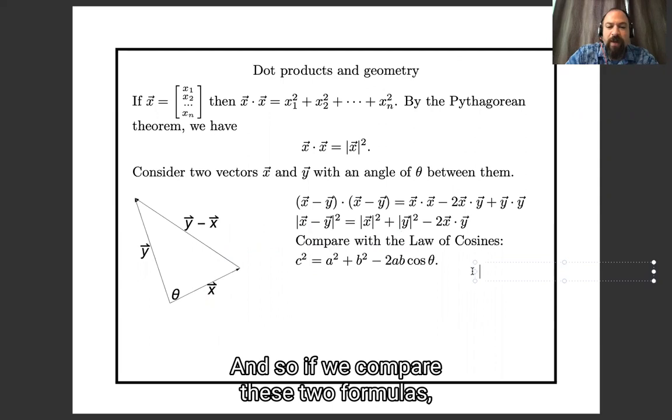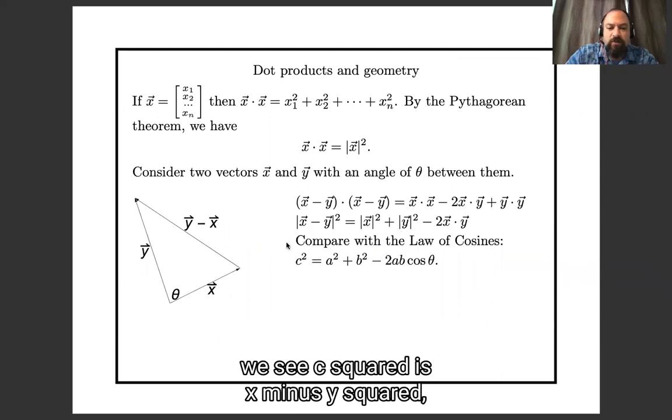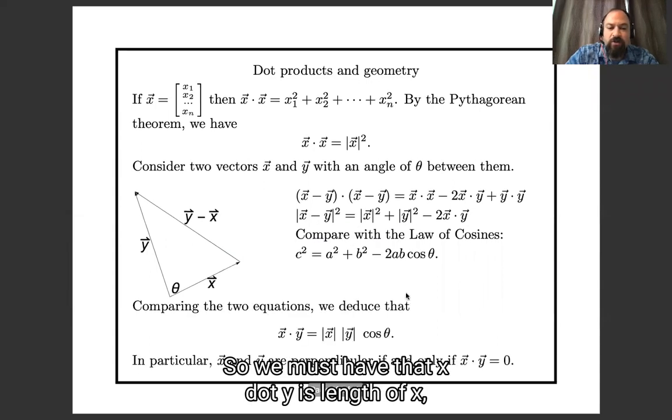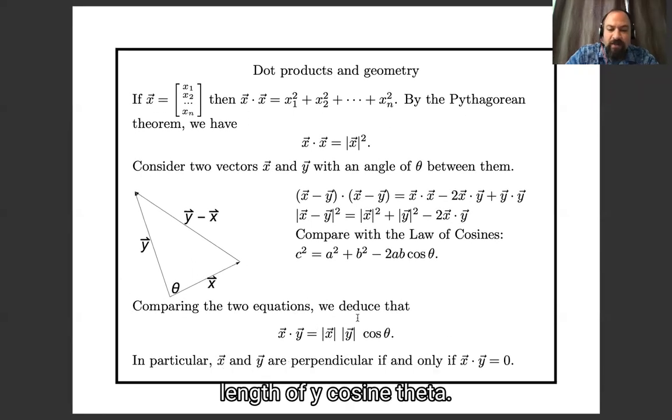And so, if we compare these two formulas, we see c squared is x minus y squared, a squared is x squared, b squared is y squared, so we must have that x dot y is length of x, length of y, cosine theta.